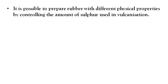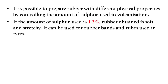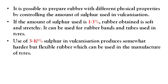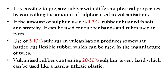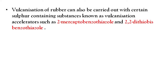It is possible to prepare rubber with different physical properties by controlling the amount of sulfur. With about 3 percent sulfur, the rubber will be soft and stretchy, used for rubber bands and tubes. With 3 to 10 percent sulfur, it becomes harder and flexible for manufacturing tires. With 20 to 30 percent sulfur, it becomes very hard, like a synthetic hard plastic.